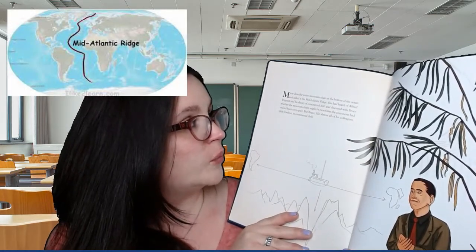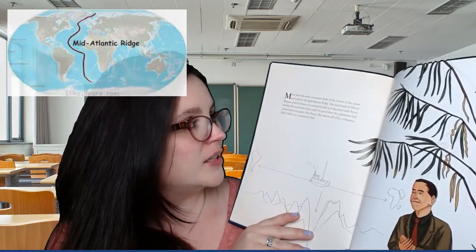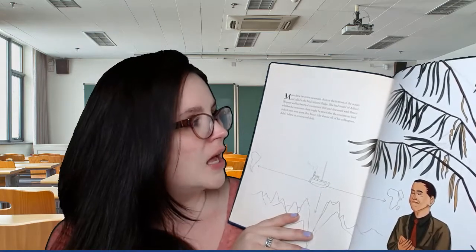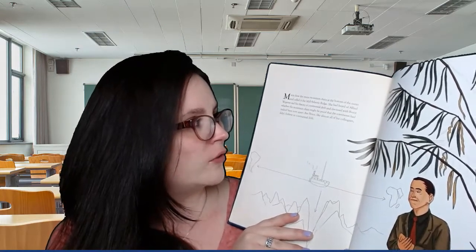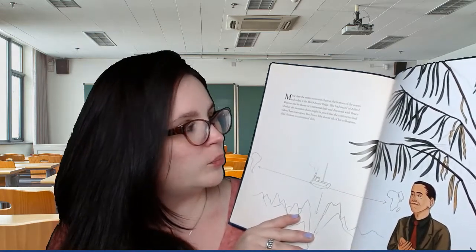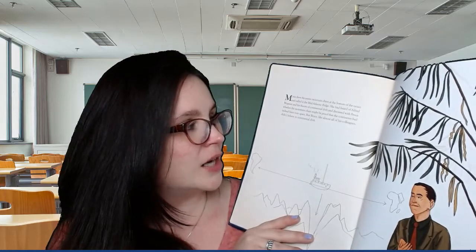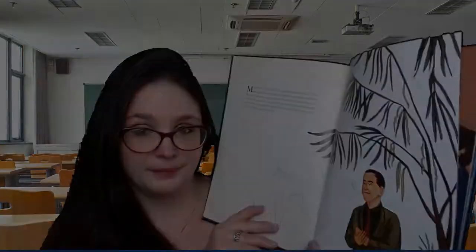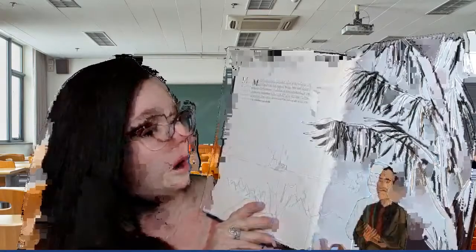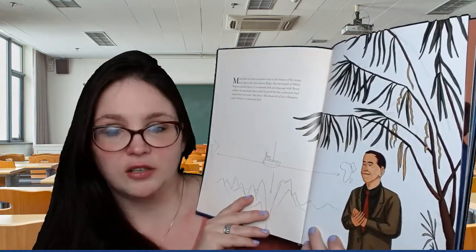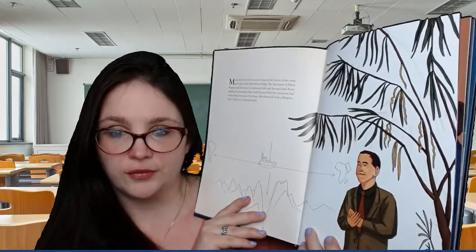She had heard of Alfred Wegener and his theory of continental drift, and discussed with Bruce whether the mountain chain might be proof that the continents had indeed been torn apart. But just like almost all of his colleagues, Bruce didn't believe in continental drift.